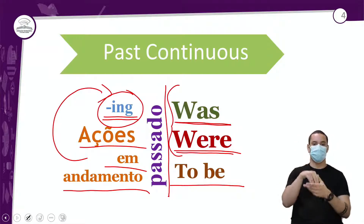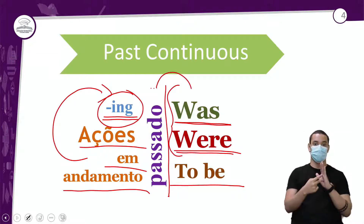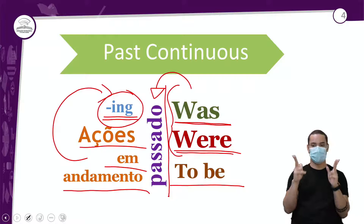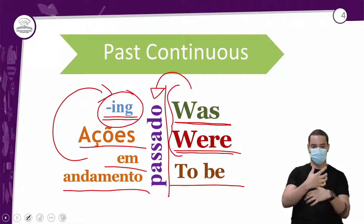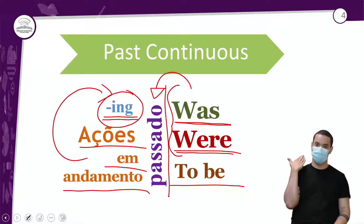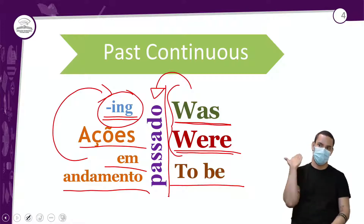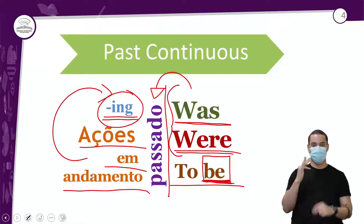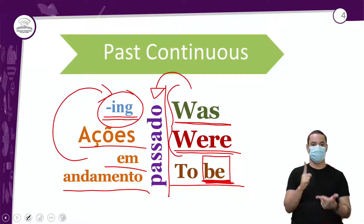O to be é um verbo diferentão. Ele é irregular e vai assumir formas no presente, outras formas no passado, e apenas no futuro você vai usar a palavra monossilábica 'be'. Por isso que no futuro a gente viu muito 'I will be' — eu estarei, eu serei — porque o verbo to be tem duas traduções: ser ou estar.